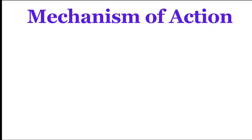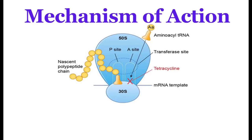Mechanism of action. Tetracycline has a bacteriostatic nature, meaning it inhibits bacterial protein synthesis. As you can see in the diagram, there is a 30S ribosomal subunit, which has a P-site and an A-site. The A-site is a binding site for amino acids that bind to the protein chain.